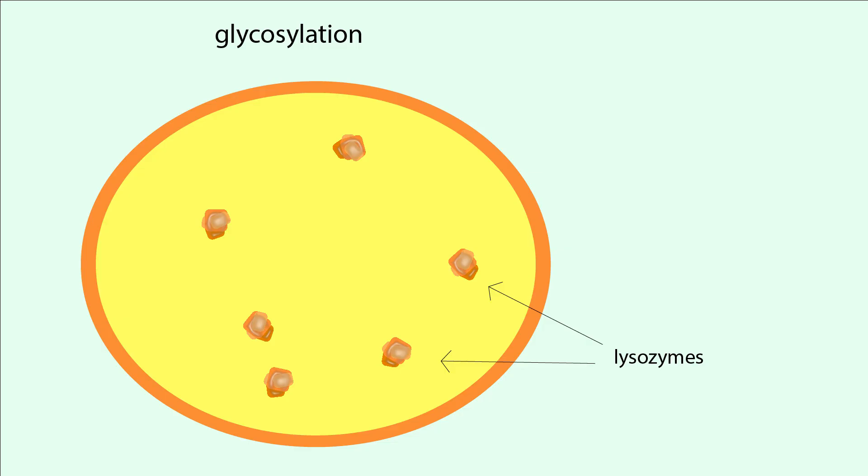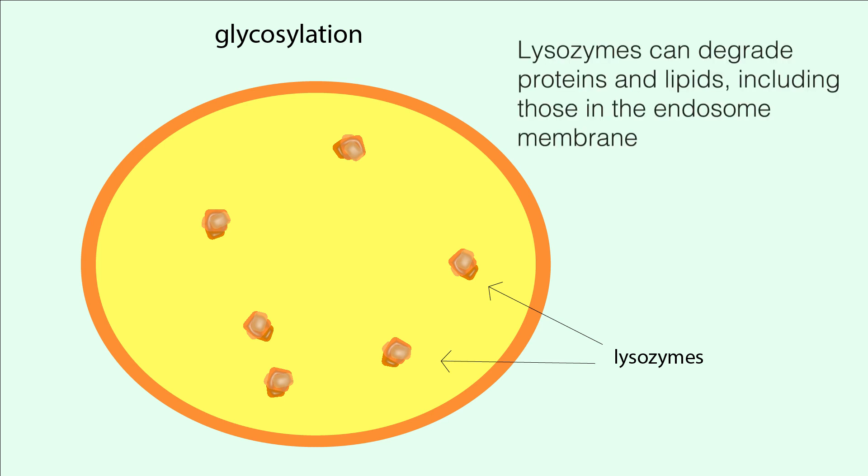The next step in endosome maturation is glycosylation. Because hydrolytic lysosome enzymes are capable of degrading both proteins and lipids, even the endosome membrane is at risk of damage. But it is critical that the endosome membrane remain intact to protect the rest of the cell from exposure to these degrading enzymes. Therefore, the luminal side of the endosome must be protected. This is accomplished through glycosylation.